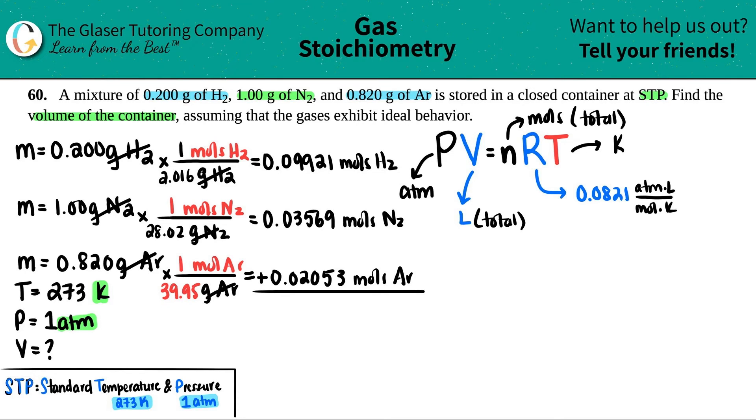So 0.09921 plus 0.03569 plus 0.02053, I get 0.15543, and that's going to be equal to the total moles, and that's our n value.